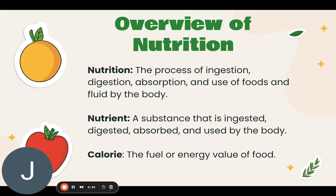A nutrient is a substance that is ingested, digested, absorbed, and used by the body. Nutrients are grouped into fats, proteins, carbohydrates, vitamins, minerals, and water. One gram of fat is equal to nine calories, one gram of protein is equal to four calories, and one gram of carbohydrate is equal to four calories. A calorie is just the fuel or energy value of food.